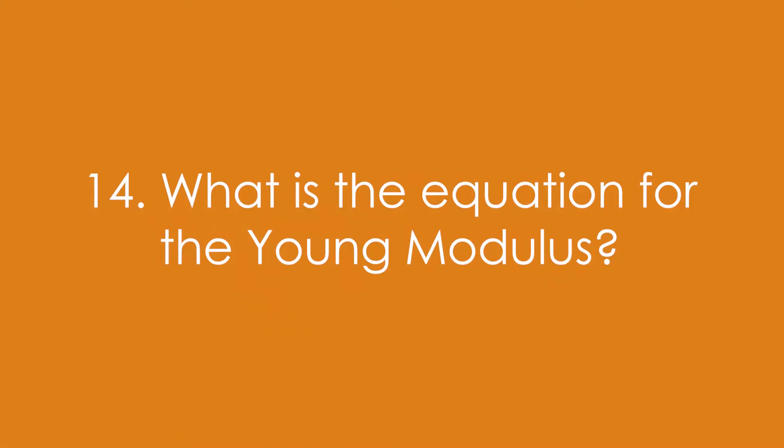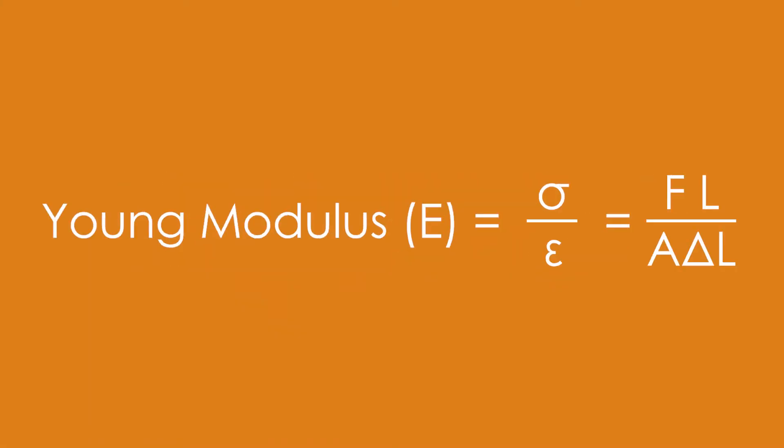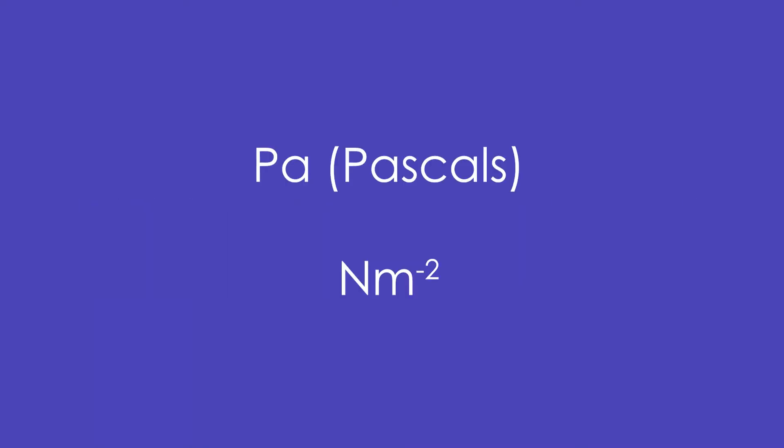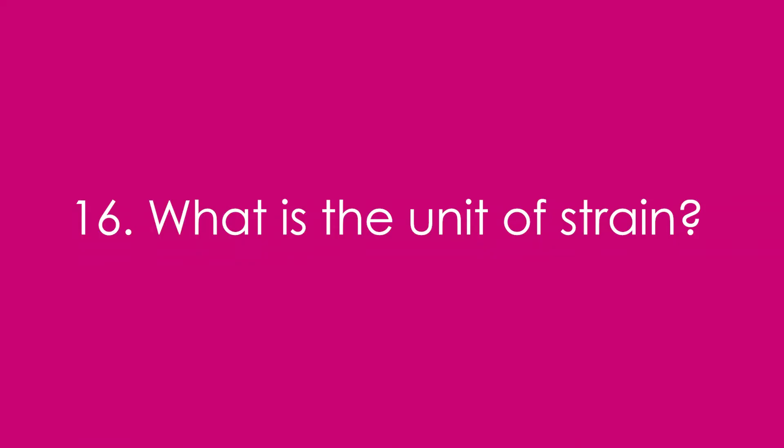It's equal to stress over strain, and its full form therefore is F L over A delta L. Fifteen, what is the unit of stress? It's Pascals, or Newtons per metre squared. Sixteen, what is the unit of strain? Trick question, it doesn't have one, because it's a ratio of length over length.